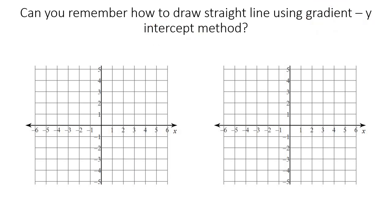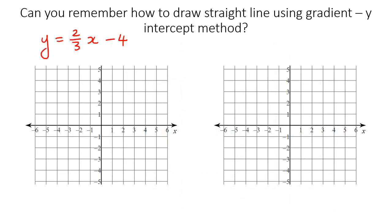Let me remind you. Let's say they give you a straight line as y equals 2 over 3x minus 4. This is not an absolute value — we are going to get to that in the next slides. But I just need to remind you something very important. There are different methods: the x-intercept y-intercept method, but one of the easier methods that a lot of teachers use, and a lot of learners absolutely love, is the gradient y-intercept method.